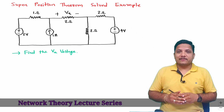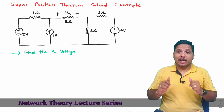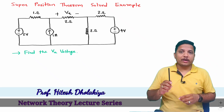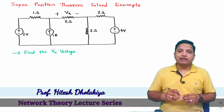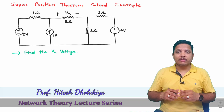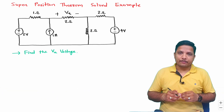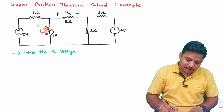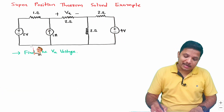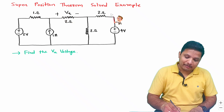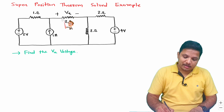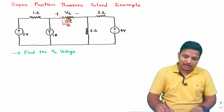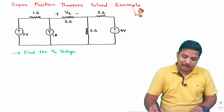Welcome to the network theory lecture series. I, Professor Itesh Dolakya, am going to explain a very interesting example based on the superposition theorem in this video. We have an interesting electrical network and we are required to find Va, the voltage across the 2 ohm resistor, using the superposition theorem.